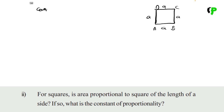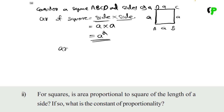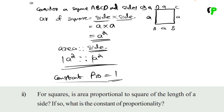For the second part, consider a square with side A. Area of square equals side times side, so area equals A squared. Therefore area is proportional to A squared, and the constant of proportionality is 1.